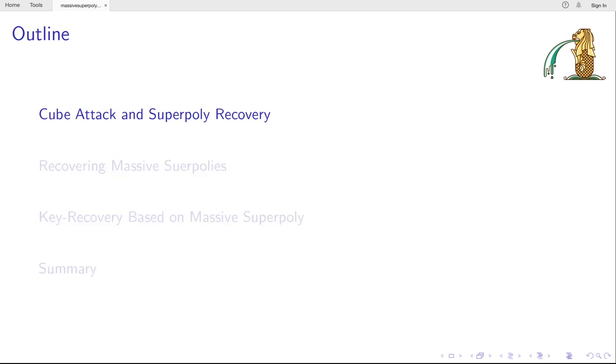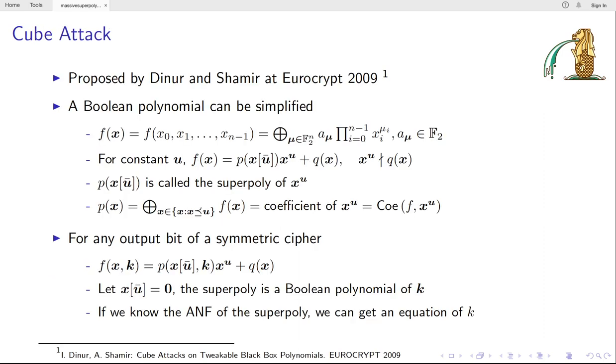The cube attack was proposed by Dinur and Shamir at Eurocrypt 2009. In this attack, a Boolean polynomial can be simplified by focusing on the coefficient of one cube polynomial x_2^u. The value of the Super-Poly can be calculated according to the Möbius transform. For a symmetric cipher system, the Super-Poly will be a function of the secret key, only if we let the non-cube nonce or IV bits be zero.